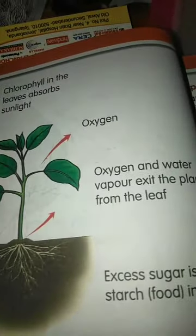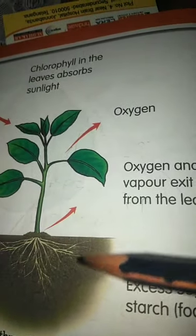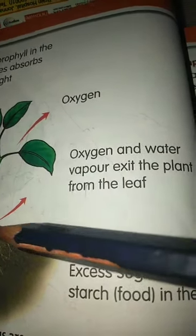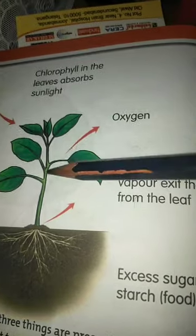Photo means light and synthesis means to combine. During photosynthesis, carbon dioxide and water combine in the presence of sunlight and chlorophyll to form simple sugars and oxygen, allowing the plants to grow. This process is called photosynthesis. The food thus produced is stored in the plant in the form of starch.